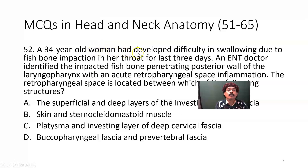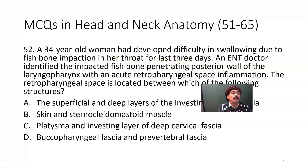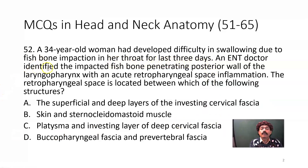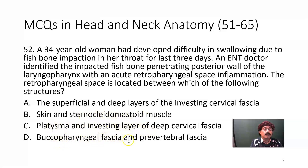A 34-year-old woman had developed difficulty in swallowing due to fish bone infection in her throat for the last three days. An ENT doctor or otolaryngologist identified the impacted fish bone penetrating the posterior wall of the laryngopharynx with acute retropharyngeal space inflammation. The retropharyngeal space is located between which of the following structures? The superficial and deep layers of the investing cervical fascia; skin and the sternocleidomastoid muscle; platysma and the investing layer of the deep cervical fascia; buccopharyngeal fascia and pre-vertebral fascia. Answer: buccopharyngeal fascia and pre-vertebral fascia.